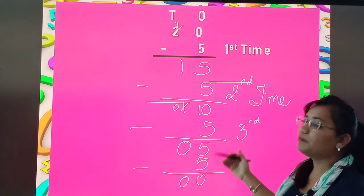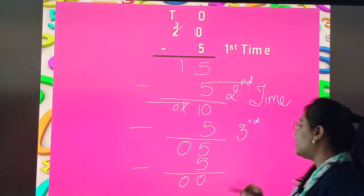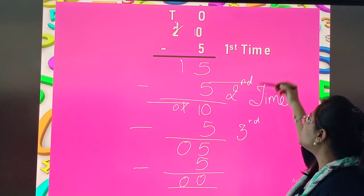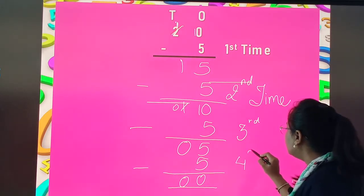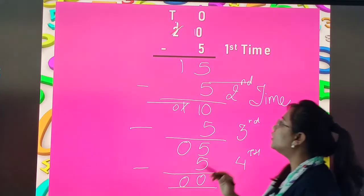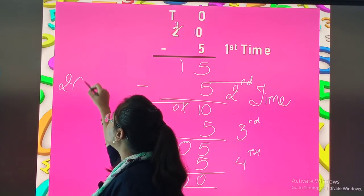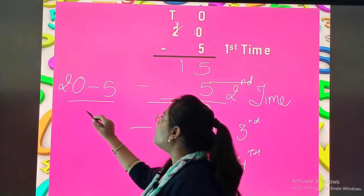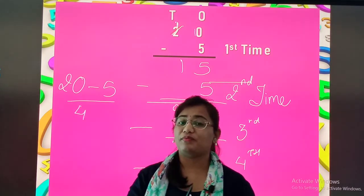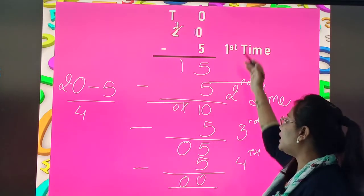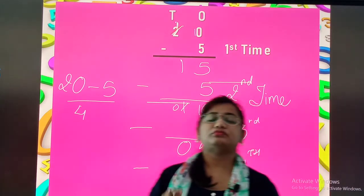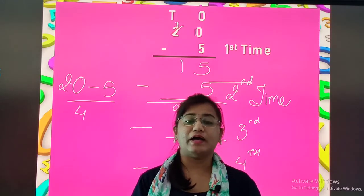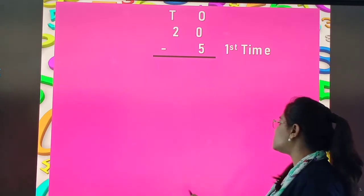So I am again subtracting 5 and my answer is 0. हम तब तक minus करते जाएं जब तक हमारा answer 0 नहीं आजाता. So मैंने कितनी बार subtraction किया? First, second, third and fourth. So if 20 is subtracted by 5 and हम उसे 4 times subtract कर रहे है तब हमारा answer 0 आजा है. This is a type of repeated subtraction in division.